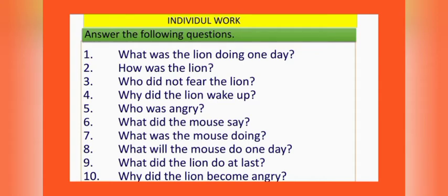Number five: Who was angry? Kye ragannit chilo? Number six: What did the mouse say? Idurtti ki bole chilo? Number seven: What was the mouse doing? Idurtti ki kore chilo?